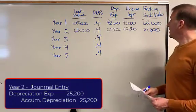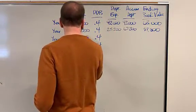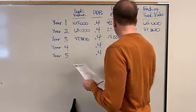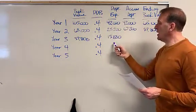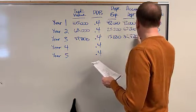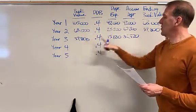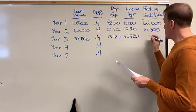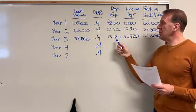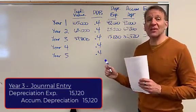Let's look at year three. Year three, our book value is $37,800. 40% of $37,800 is $15,120. So then our total accumulated depreciation, we would add up all of these and you would get $82,320. Our ending book value then would be $37,800 minus $15,120, which would get me $22,680. Our journal entry would be debit depreciation expense $15,120, credit accumulated depreciation $15,120.